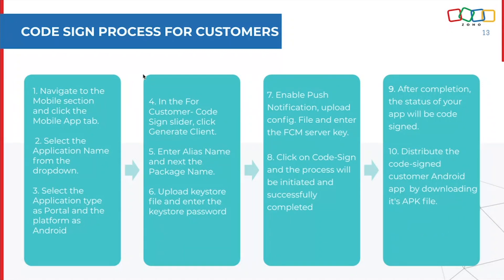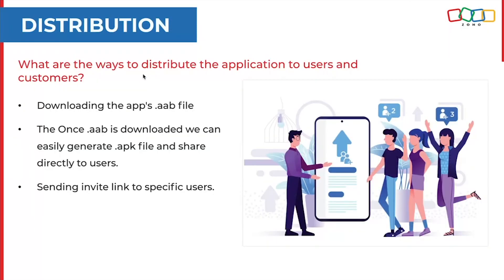For customers, the process is similar except you only need to upload the KeyStore file — not the app signing KeyStore file. For distribution, you'll get the APK and the code sign link. Distribution comes in three ways for both customers and users: downloading the AAB file and generating the APK from it to share directly; downloading the APK directly; or sending an invite link to users, who will receive an email notification to access the app. The application must already be shared with users with a certain permission set and they must be active.